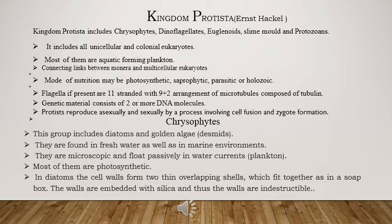The first group of Protista is chrysophytes. These include all the golden algae and diatoms that are found in fresh water as well as marine water. These are microscopic in nature — so small that we can only identify them when they are in colony form. They can float from one place to another by water currents and are photosynthetic in nature, having chlorophyll pigment in them.